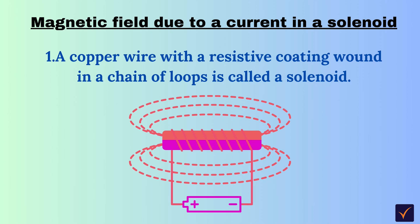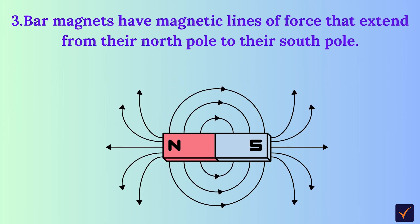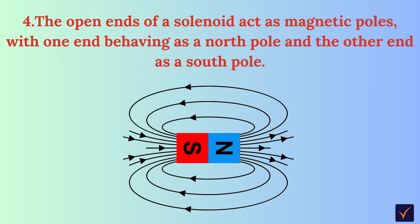Electric current passing through a loop produces magnetic lines of force. When such a loop with a resistive coating is wound in a chain, it becomes a solenoid. Bar magnets have magnetic lines of force that extend from their north pole to their south pole. Similarly, the open ends of a solenoid act as magnetic poles, with one end behaving as the north pole and the other as the south pole.